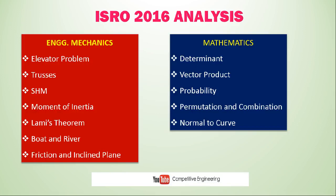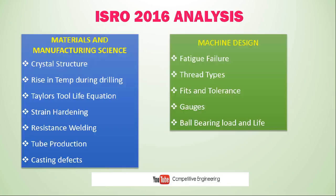From Material Science and Manufacturing, there was a question on crystal structure — what is the crystal structure of iron, copper, and another metal. Temperature rise during a drilling process was asked from manufacturing. Taylor's tool life equation had a problem-based question. Strain hardening had a theory question. A problem on resistance welding concepts was included. Mass production of seamless tubes (theory question on method used) and casting defects such as misrun due to insufficient fluidity of molten metal were also covered. Theory questions dominate manufacturing.